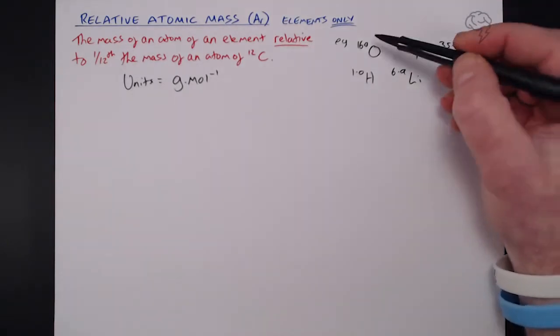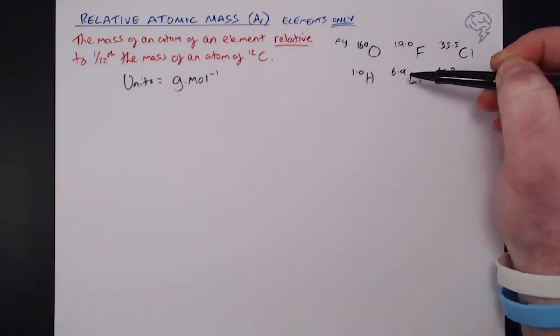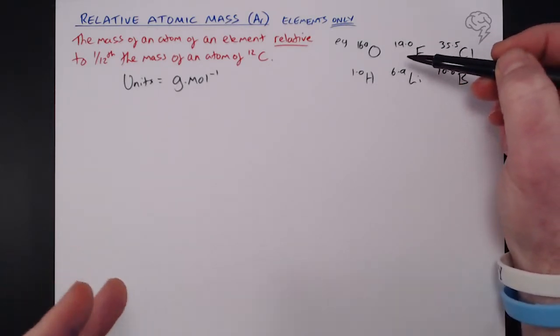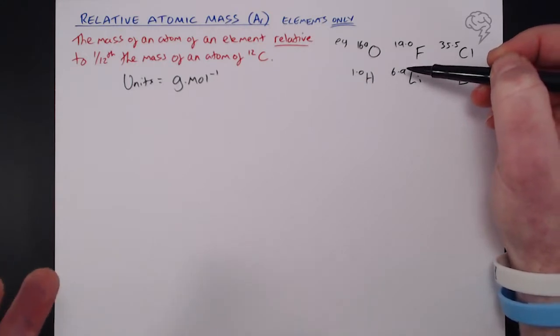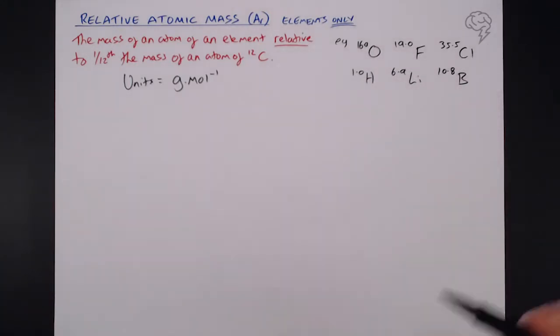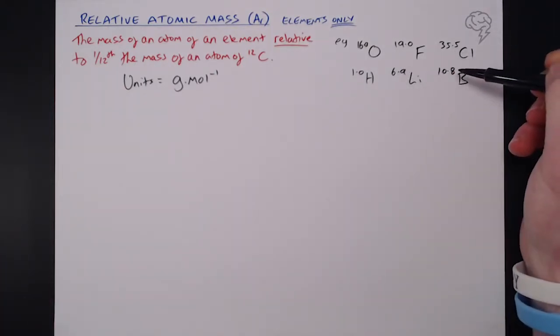Now, you'll notice that three of these aren't integers. They are 0.5, 0.8, and 0.9. Now, if you think back to GCSE, you were told that this is a mass number. There's nothing wrong with that. But the thing is, we can't get 0.9 of a proton or 0.8 of a neutron or whatever goes towards that mass number. So these numbers don't make sense in that respect.